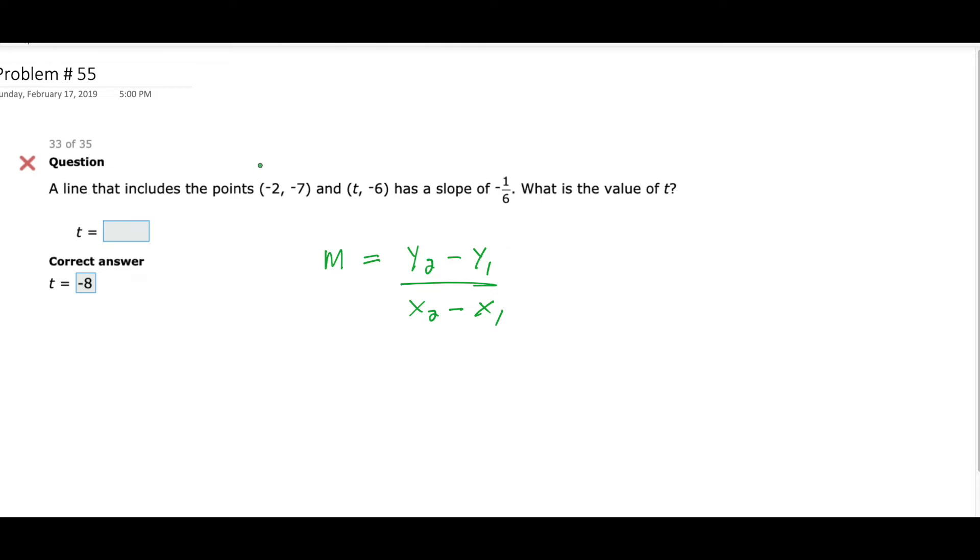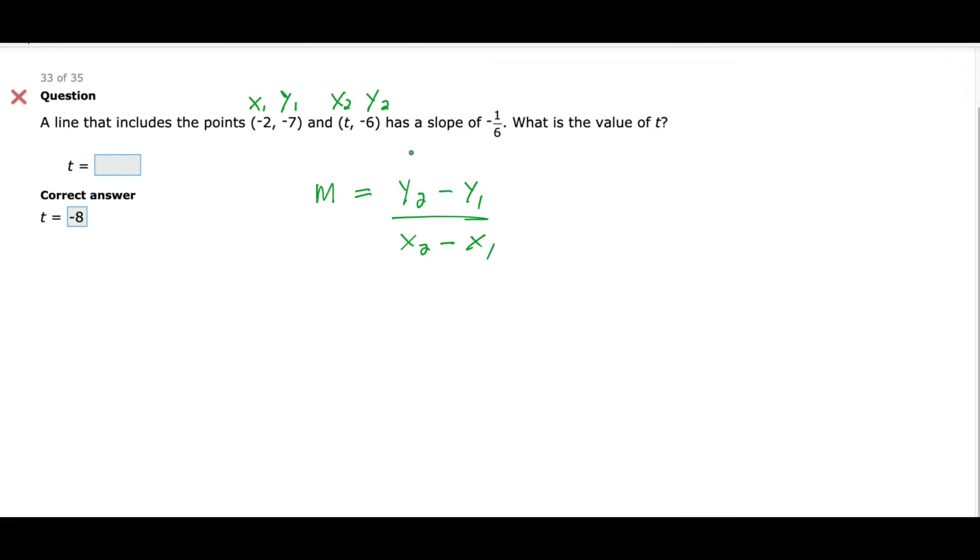Okay, and we'll make this x1 and then y1, and x2, y2. Now what? -6 plus 7. So -7 because I just do plus because it's the same thing. Well, the slope is -6, right? So that's m.